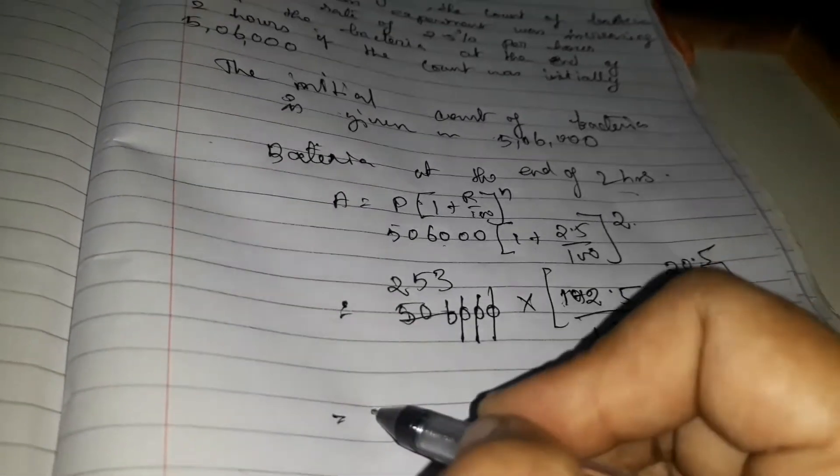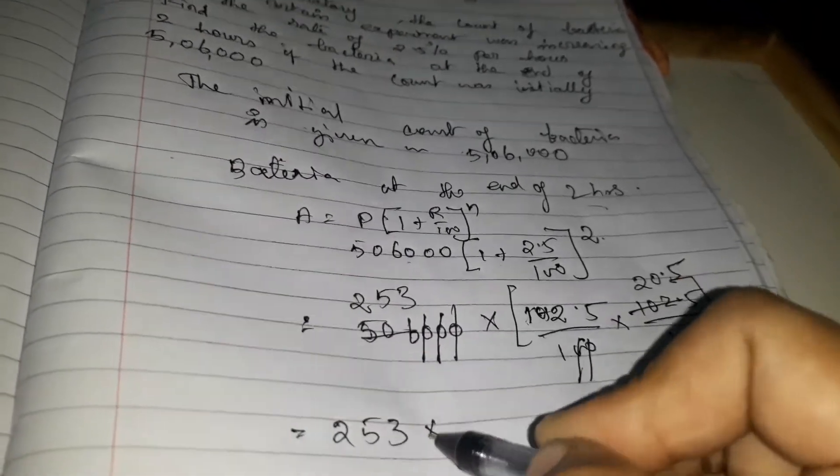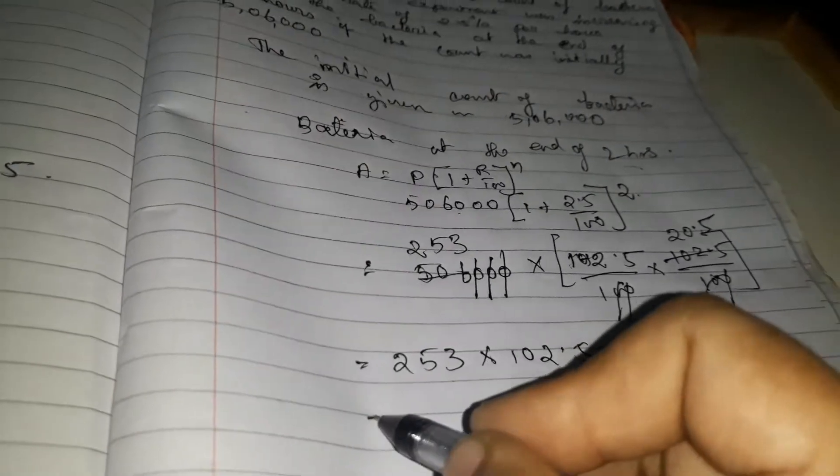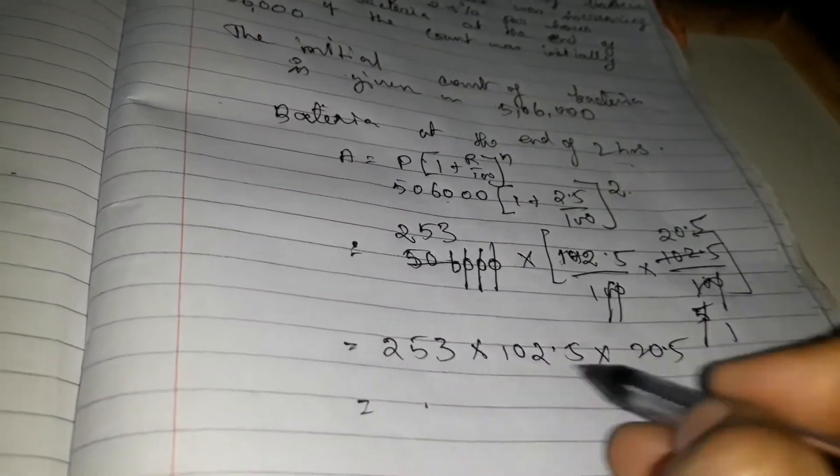Now 253 into 102.5, into 20.5. This equals to... multiply.